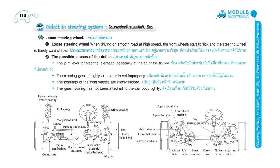Additional components shown include: control arm bushings, control arm, upper ball joint, upper control arm, power steering gearbox, shock absorber, lower ball joint, lower control arm, stabilizer link, idler arm, inner tie rod end, center link, pitman arm, and adjusting sleeve.